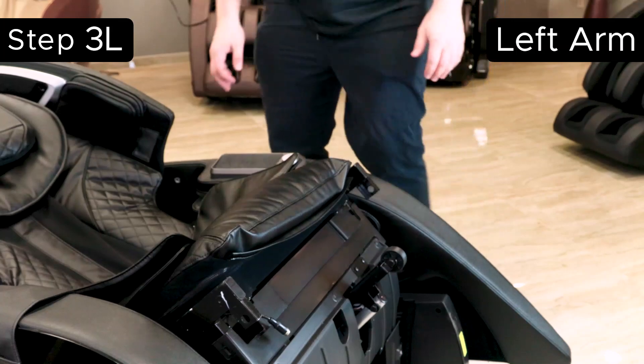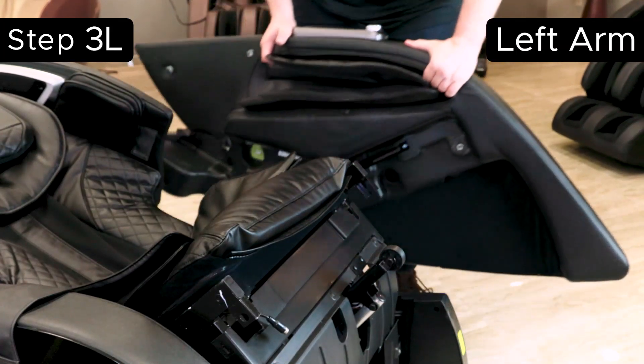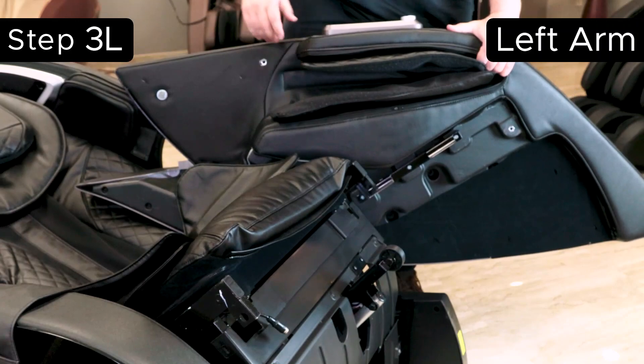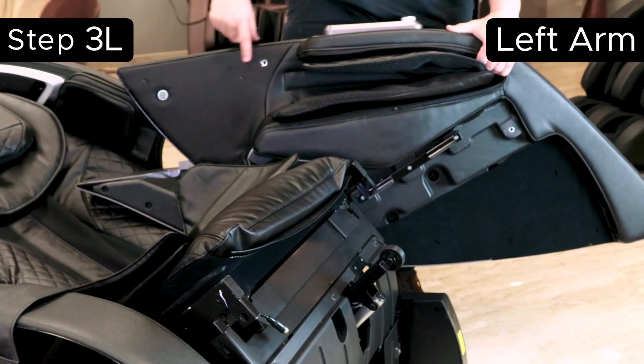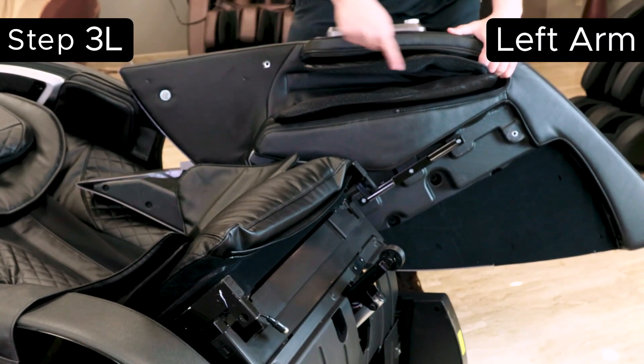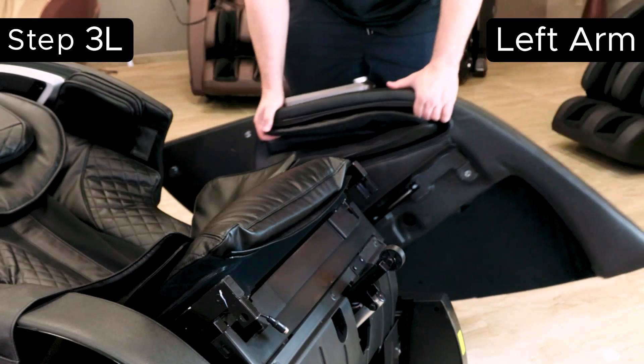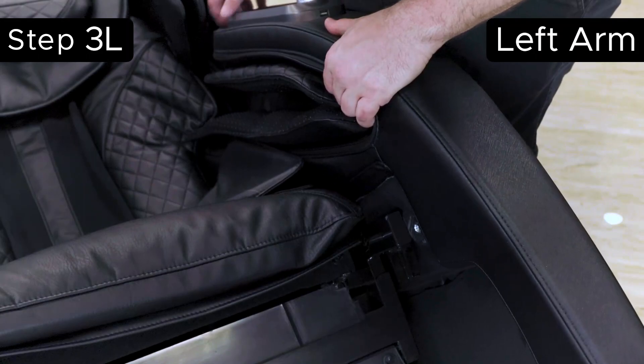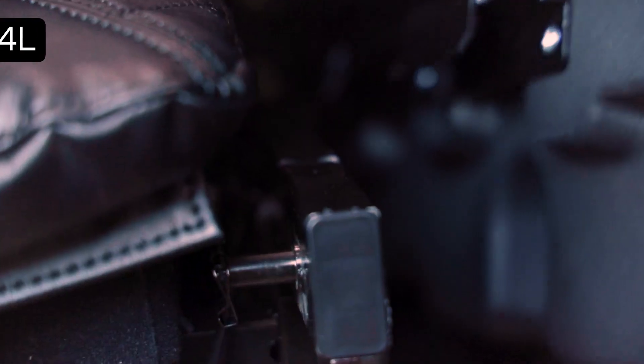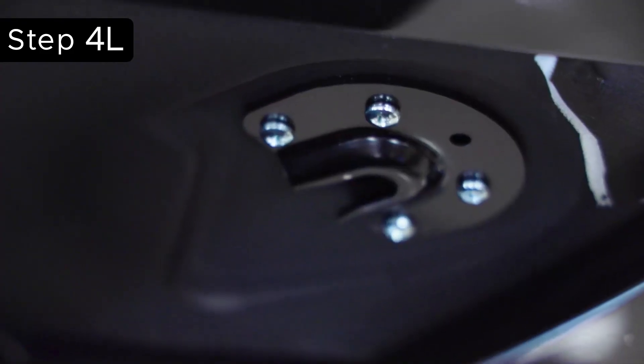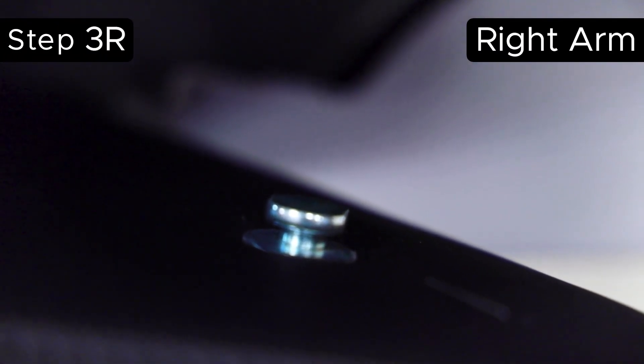Before you slide the arm onto the body of the chair, note these three connection points. One is for the hook towards the back, the other two are for screws that we will use to secure the arm to the body of the chair. Avoid pinching these wires and air hoses. There are rails on the body of the chair and hooks on the arm that slide over the rail. Guide this arm down the rail and make sure that towards the back of the chair, you slide the connector into the slot.